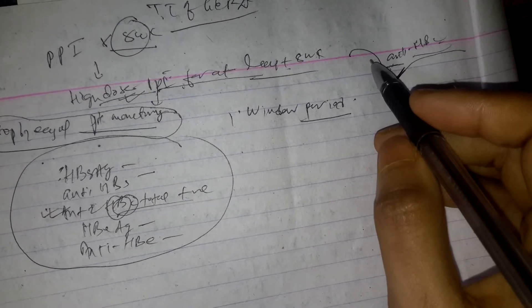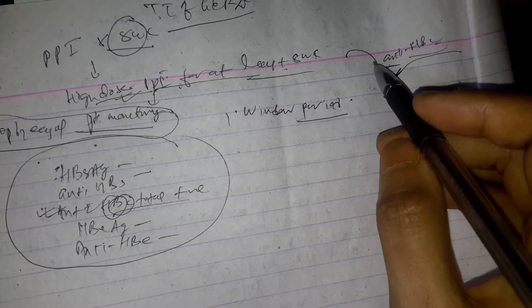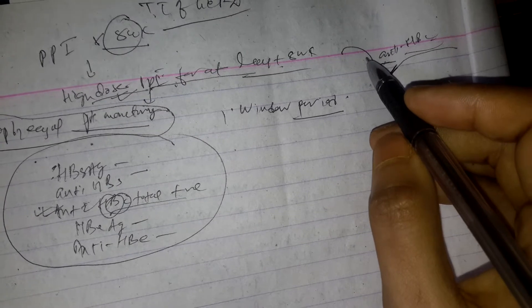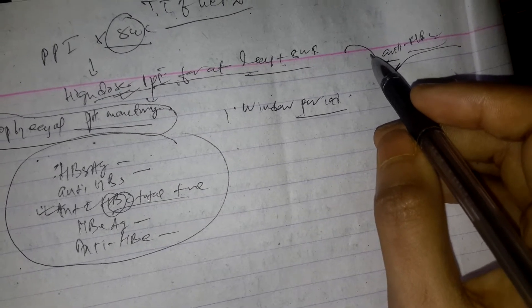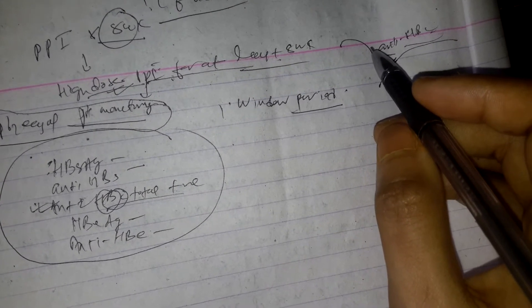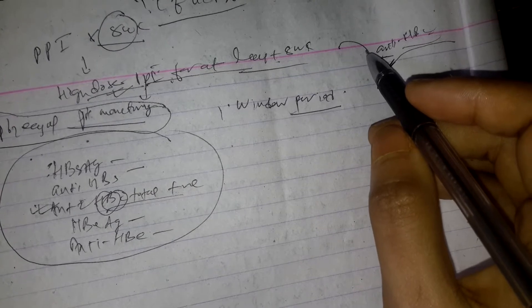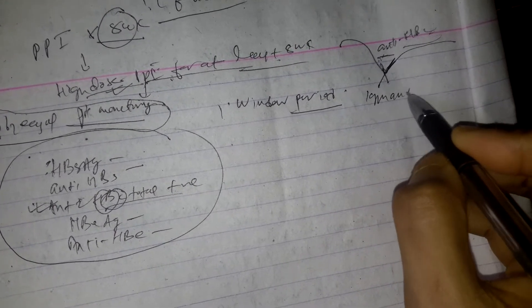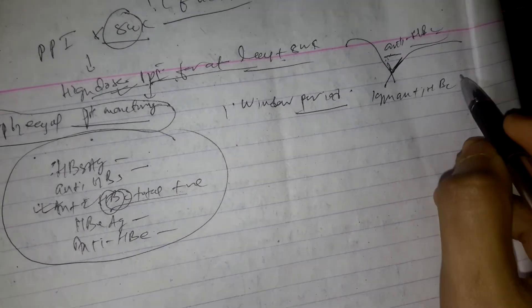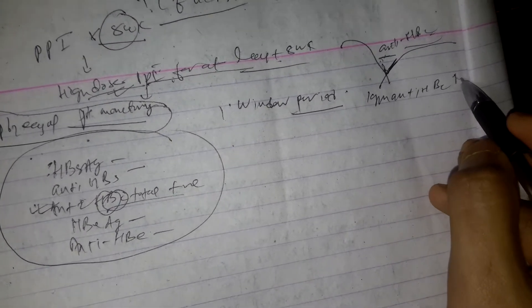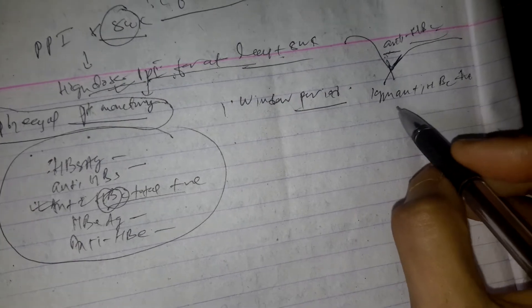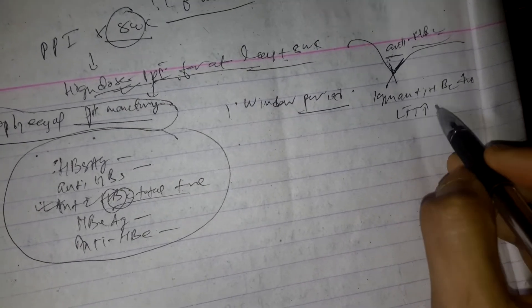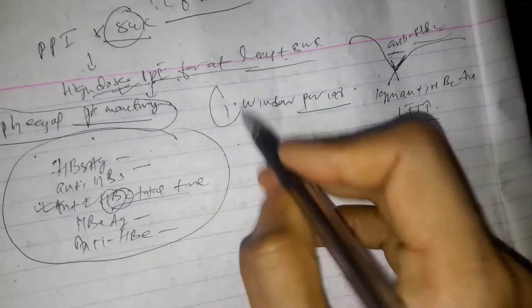So there is some gap in which there is neither HBsAg, neither anti-HBs at detectable level. And during that time anti-HBc can be detectable. And patient may be symptomatic with history of recent exposure. But about 70% have subclinical hepatitis. And in this case, IgM anti-HBc is elevated or positive and liver enzymes are elevated.